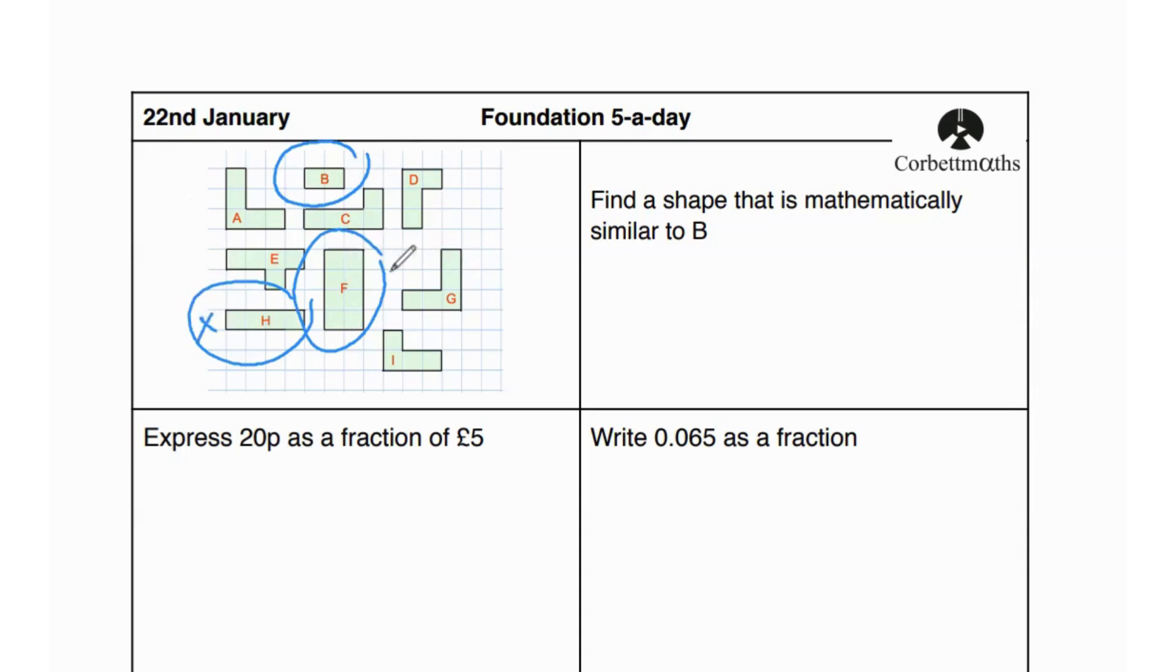Now if we look at F, one, two, three, four. Four boxes over here and two boxes over here, which means the scale factor has been properly used over here because both the lengths change, not just one. Hence shape F is the mathematically similar shape to B.